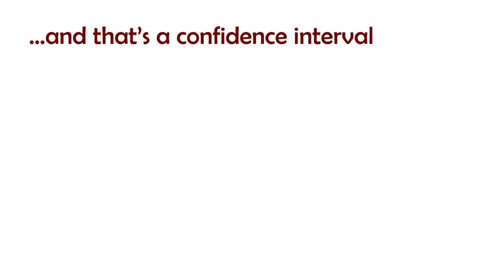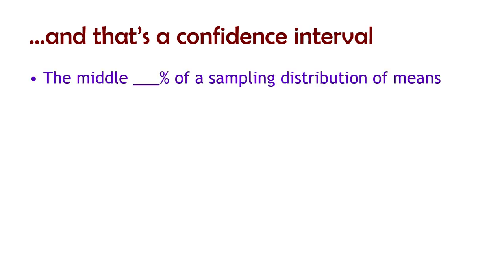A confidence interval is the middle some percent of a sampling distribution of means. That sampling distribution comes from a population with a particular mean and standard deviation, so we can figure out the mean and standard deviation of the sampling distribution of means. Typically, we use confidence intervals of 90%, 95%, or 99%. The 95% is most common, followed closely by 90% and 99%.